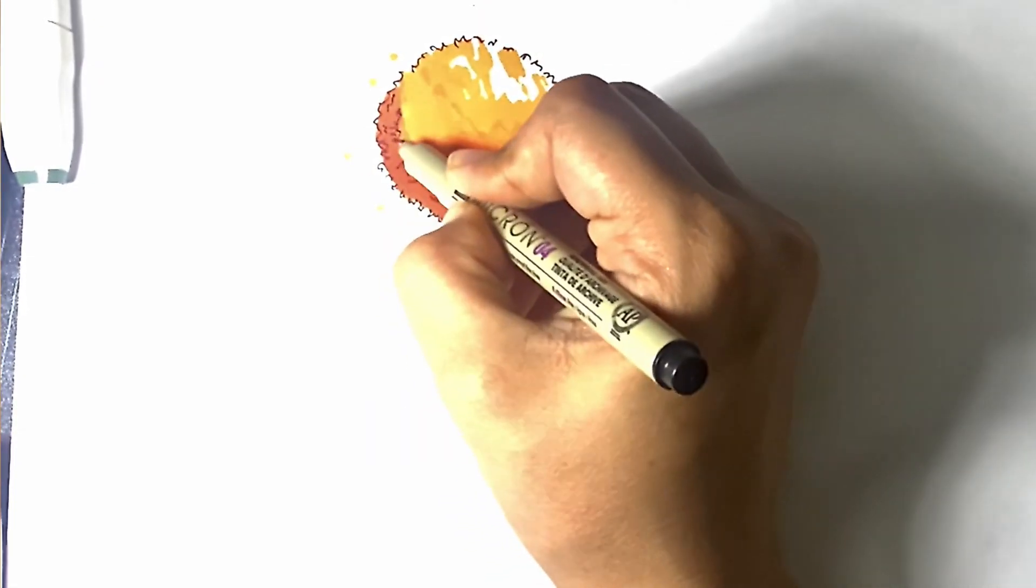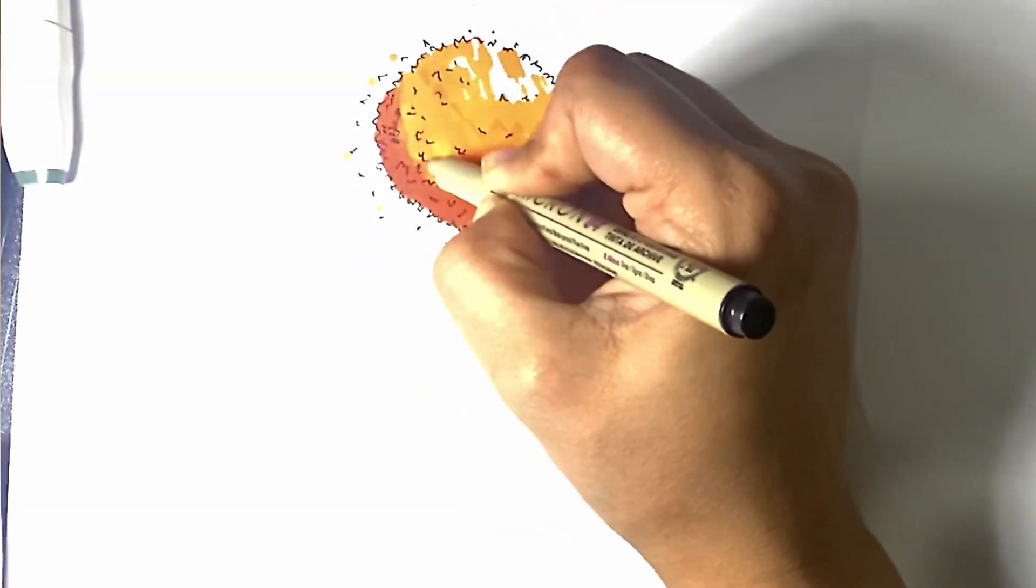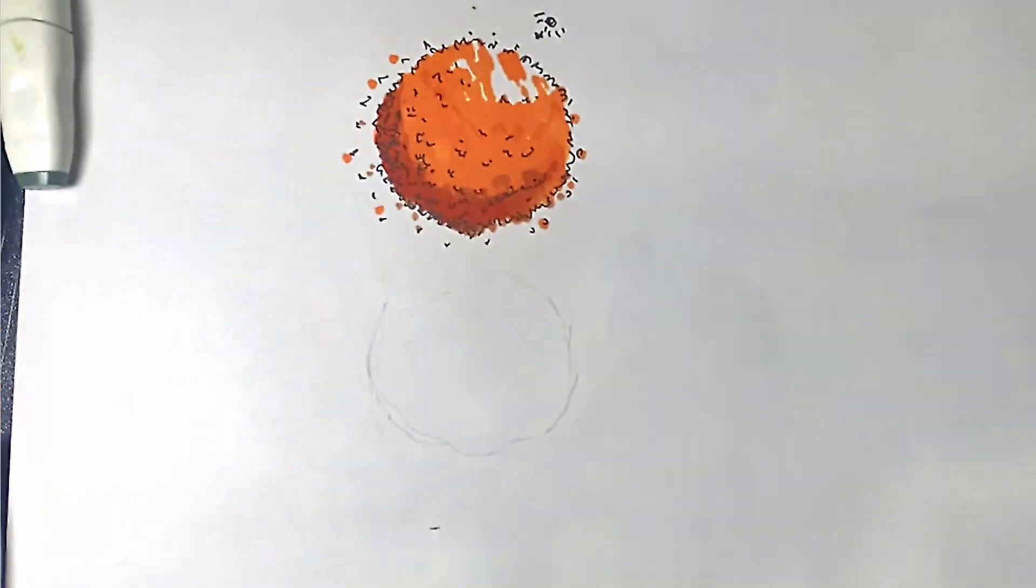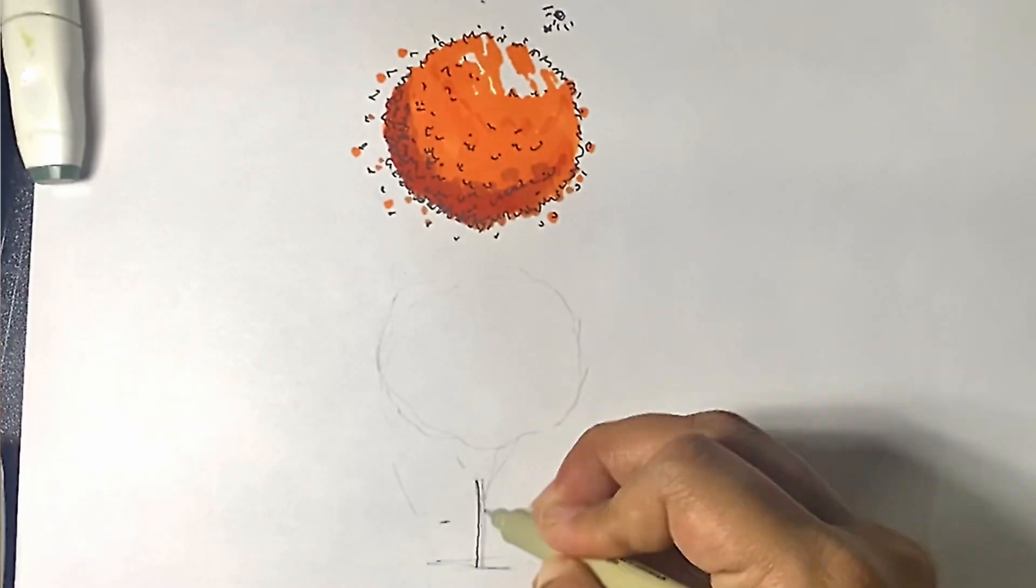After that, we're going to use our fineliner drawing pen and give some details to the tree. I will also use the light direction to give the shadow area.